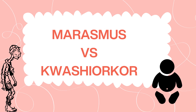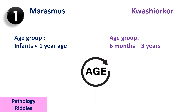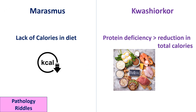Hi, welcome to Pathology Riddles. Today we will be dealing with differences between marasmus and kwashiorkor. Marasmus usually happens in infants less than one year of age, whereas kwashiorkor happens in the age group of six months to three years.